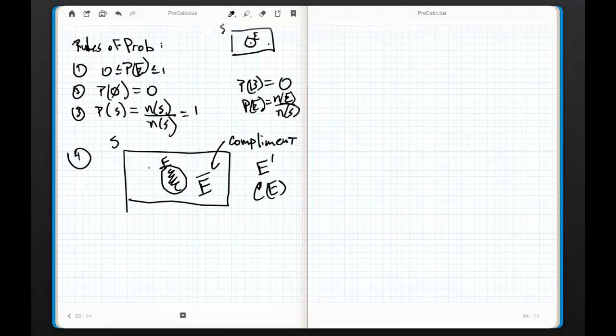So if you think about it, if the probability of an event is equal to the number of ways that the event can happen divided by the total number in the sample space, well, then the probability of its complement is every other thing that can happen. Like when I was talking about the probability of rolling a 7, the probability of the complement of rolling a 7 is rolling a 2, 3, 4, 5, 6, 8, 9, 10, 11, and 12.